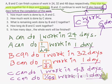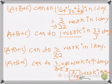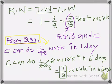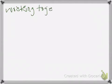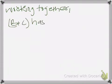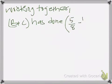C has done the remaining work in the last 6 days working alone, which is 1/48 times 6 equals 1/8 work. So the remaining work for B and C was 5/8, but 1/8 part has already been completed by C alone. Therefore, by working together, B plus C has done 5/8 minus 1/8 work together.